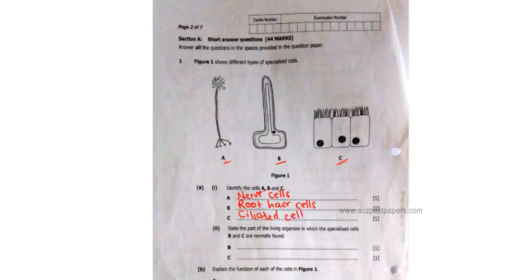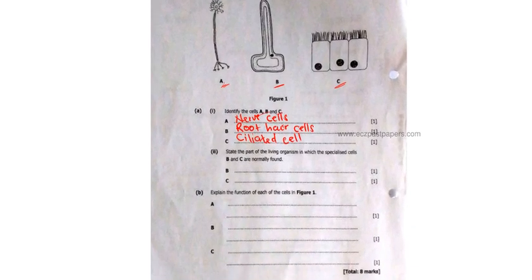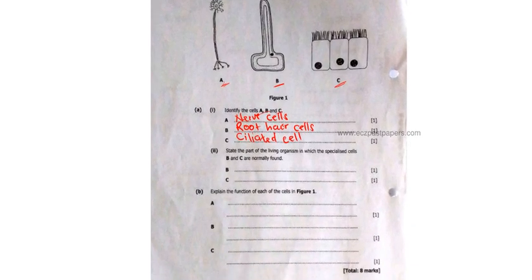Question 1A2 says: state the part of the living organism in which the specialized cells B and C are normally found. So B is found in the roots. I'm sure you can tell from the name - it's the root hair cells, so they are found in the roots.